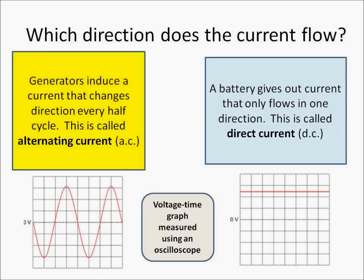This can be shown on a voltage-time graph, which can be measured using an oscilloscope. Voltage is on the y-axis and time is on the x-axis. On the right graph, the voltage stays the same, so the current flows in one direction the whole time. On the left graph, the voltage goes from low to high, from negative to positive, so the current is changing direction every cycle.